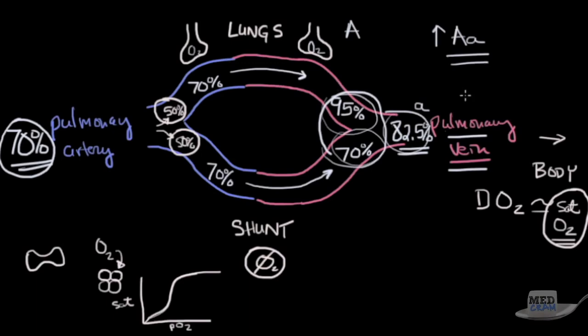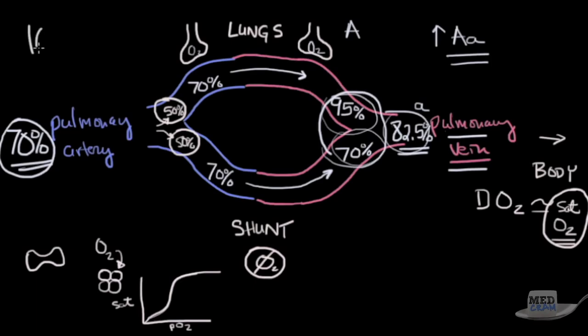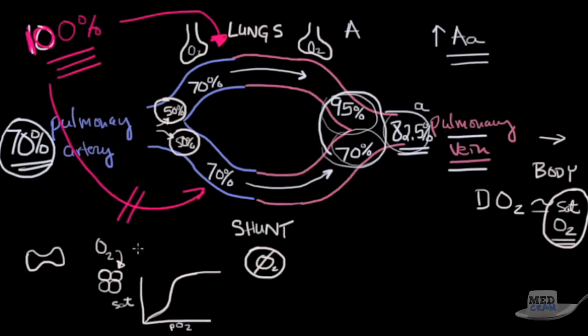What about if we give 100% oxygen? This is probably the most important point to understand in this whole lecture: what happens next when we add 100% oxygen. That 100% oxygen is going to affect this side of the equation, but it's not going to affect this side of the situation because this shunt by definition is not seeing any oxygen in the lungs. When we give 100% oxygen to this side, what's going to happen over here?